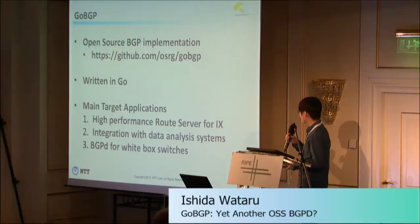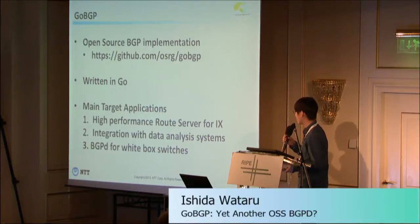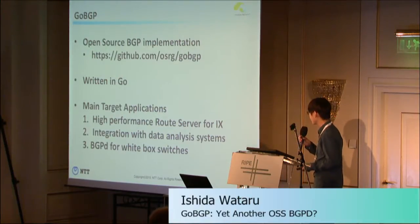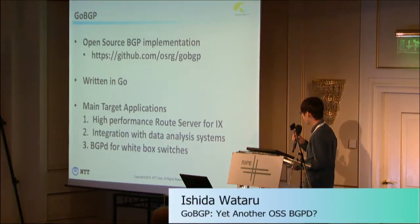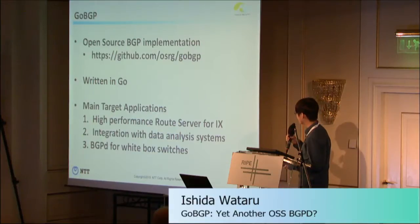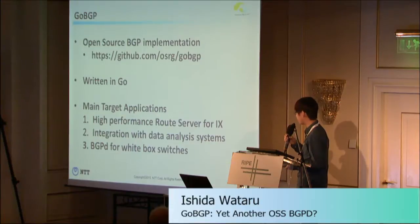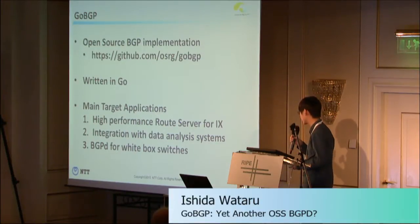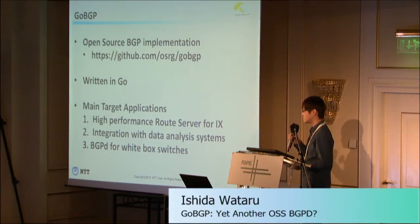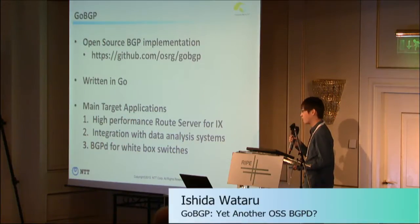GoBGP is an open-source BGP implementation hosted on GitHub. As you can see from the name, it is written in Go, and it is under the Apache 2 license. The main target applications of GoBGP are: first, a high-performance route server for internet exchanges; second, integration with data analysis systems; and third, a BGP daemon for white-box switches.